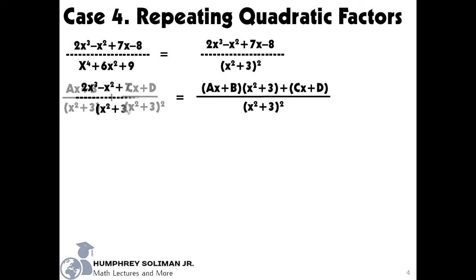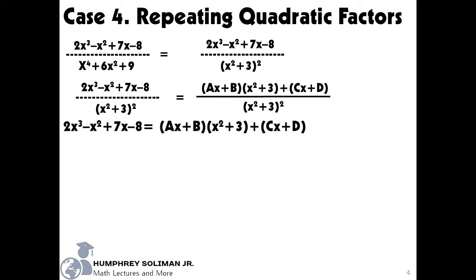You can observe that the rational expression we started with and the single rational expression we got with A, B, C and D have the same denominators. This will allow us to equate the numerators separately. We can start simplifying our right side by multiplying the quantities Ax plus B and x squared plus 3.